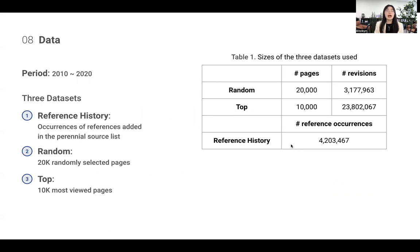In this presentation, I will introduce three datasets that we used. The first one is the Reference History dataset, which tracks occurrences of references that are added to the Perennial Sources List. We also have Random and Top datasets: 20,000 randomly sampled pages and 10,000 most viewed pages. The period we consider covers from 2010 to 2020.